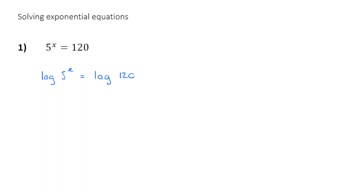You can do that because, remember with equations, whatever you do to the left-hand side, you also do to the right-hand side. So I can log both of these — it's absolutely fine, so long as the base of the log is the same. For simplicity's sake, we're just going to use log base 10. Now how does that help? Well, it helps because we can use the third law of logarithms that we learned earlier.